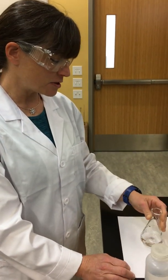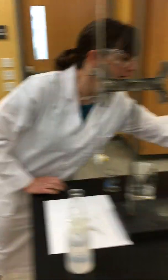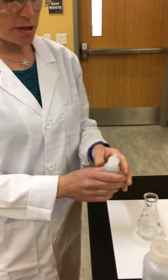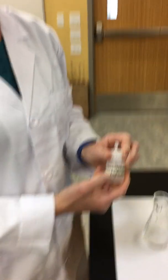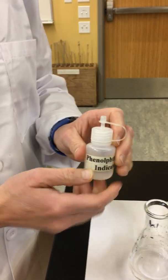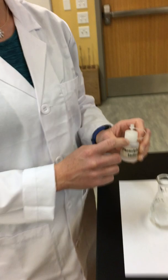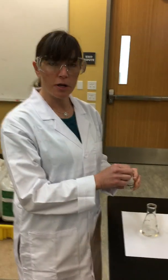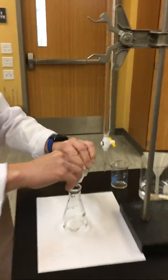the next thing we have to do is add what's called an indicator to our solution. The indicator we are using is phenolphthalein, and indicators will give us a visual clue of when we reach the endpoint of titration. So how phenolphthalein works, I'll add a couple drops,